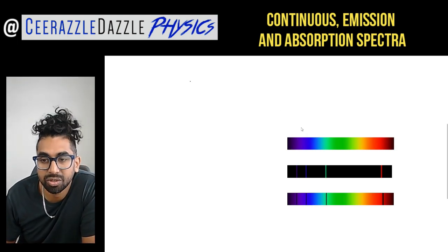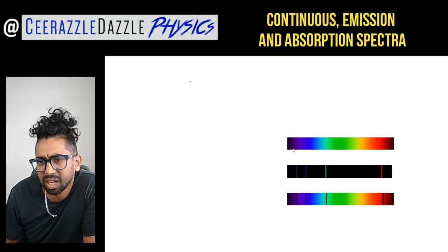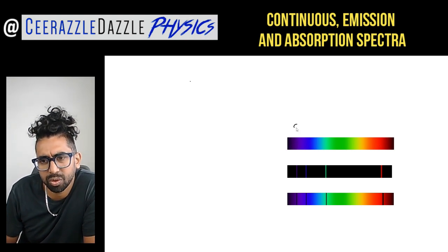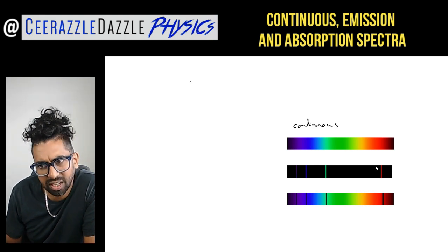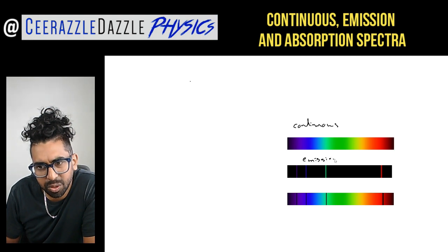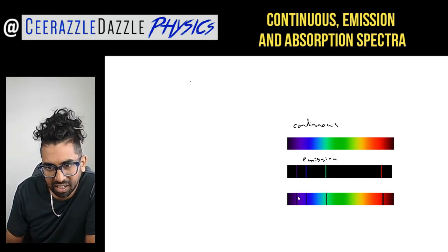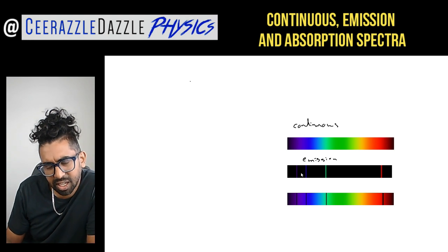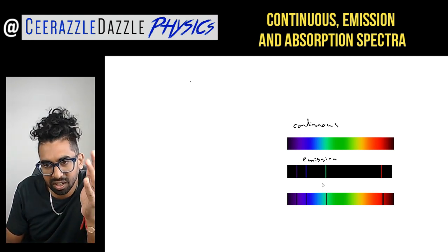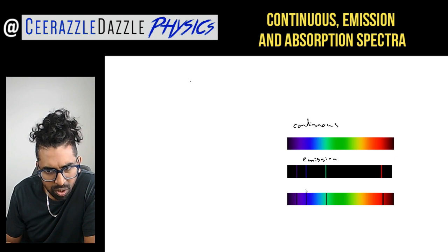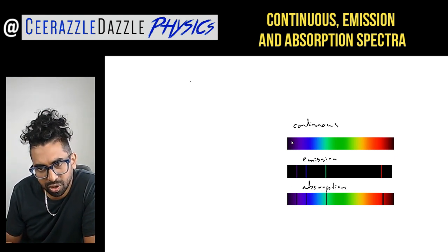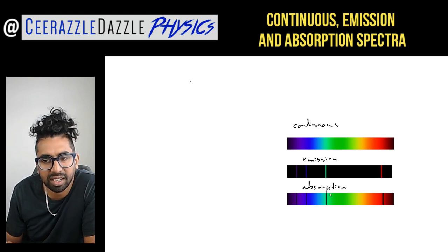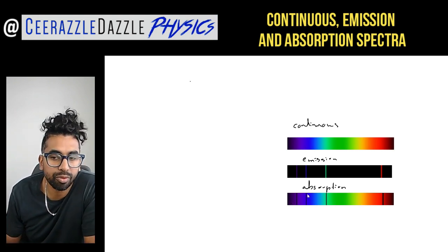Maybe you've seen these at school. There are three different types. This first one is like a rainbow — it's called the continuous spectrum. The next one underneath is the emission spectrum, which is mostly black with colored lines. And the last one is the absorption spectrum, which looks like the rainbow but has black lines in it.